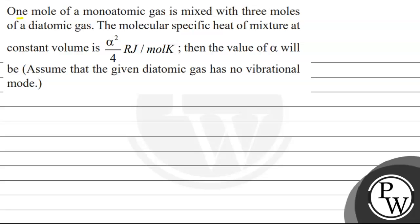Let's read this question. One mole of monoatomic gas is mixed with 3 moles of a diatomic gas. The molecular specific heat of mixture at constant volume is alpha squared by 4R joule per mole Kelvin. Then the value of alpha will be.